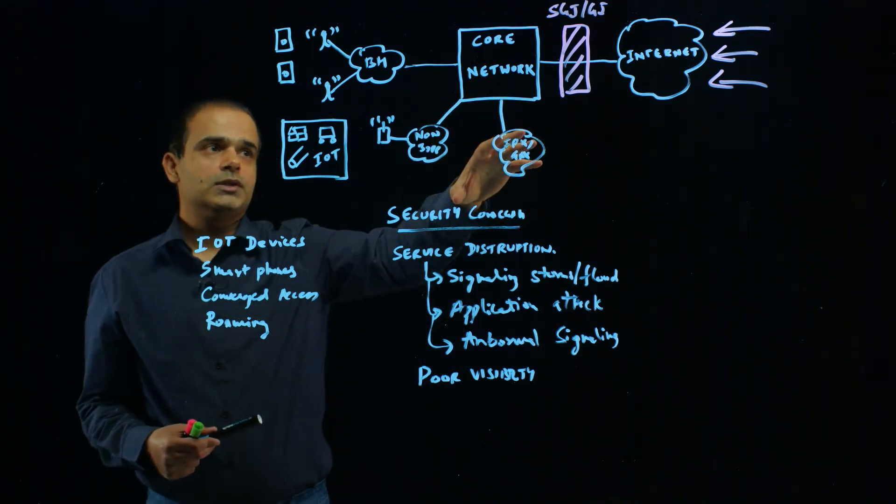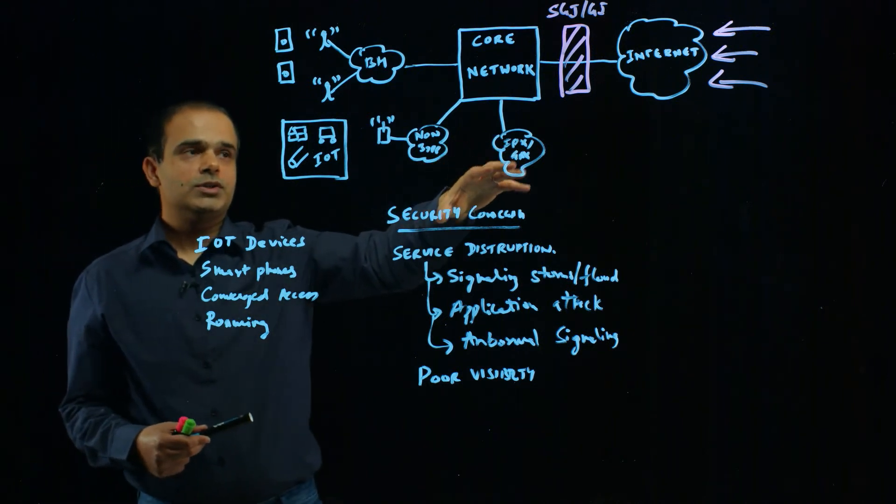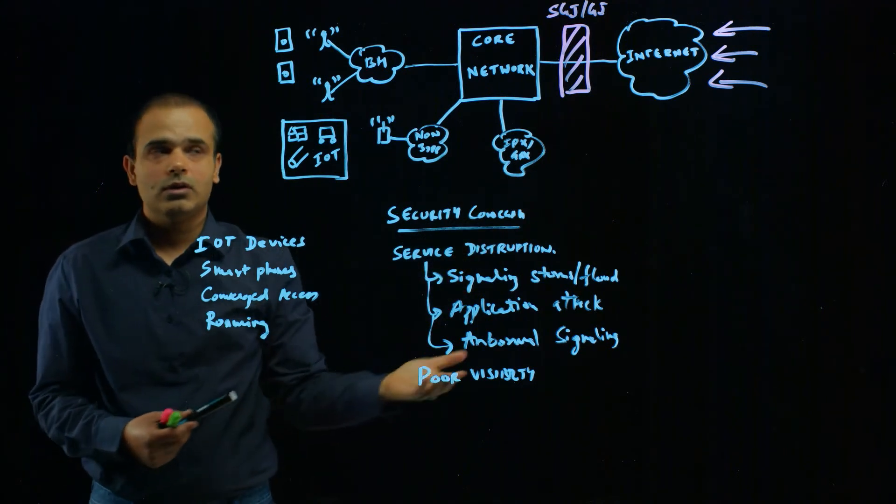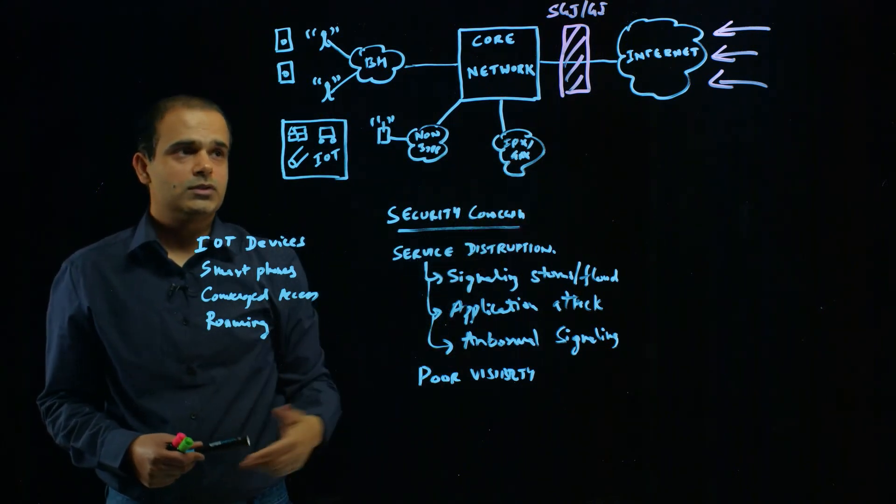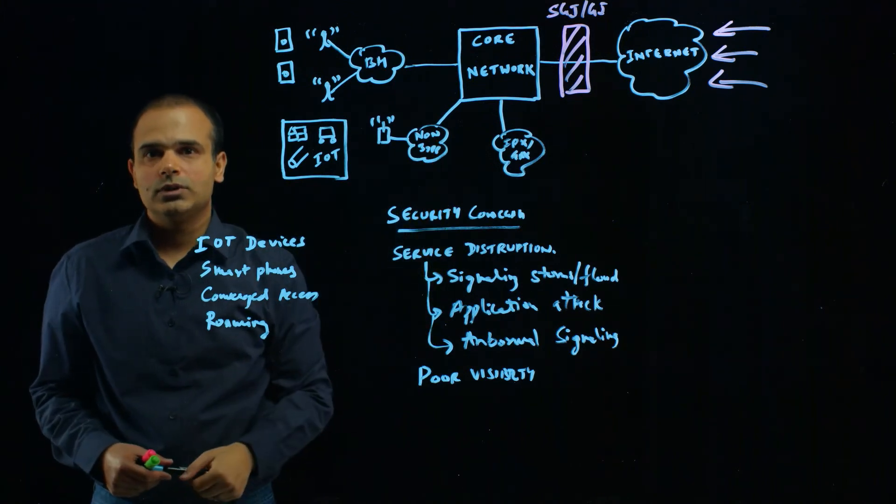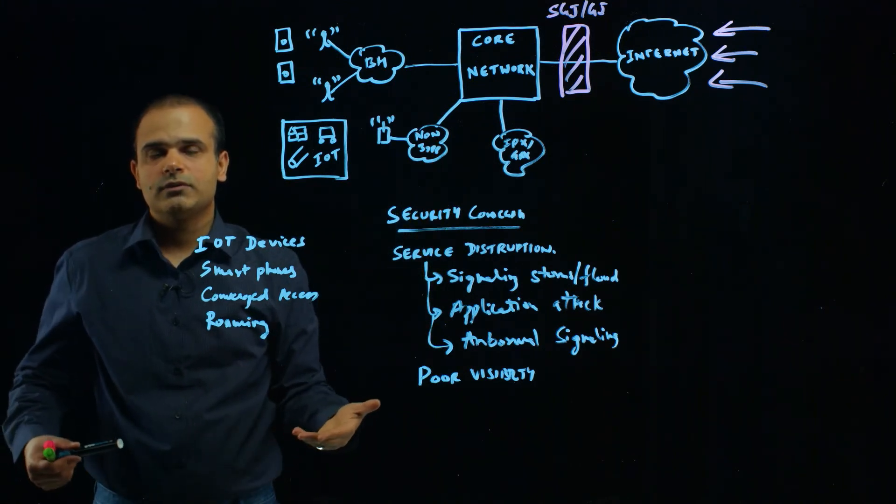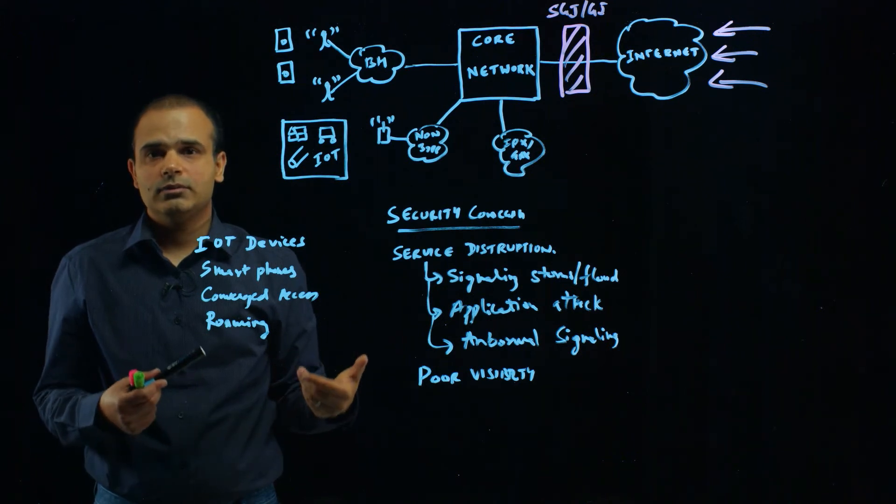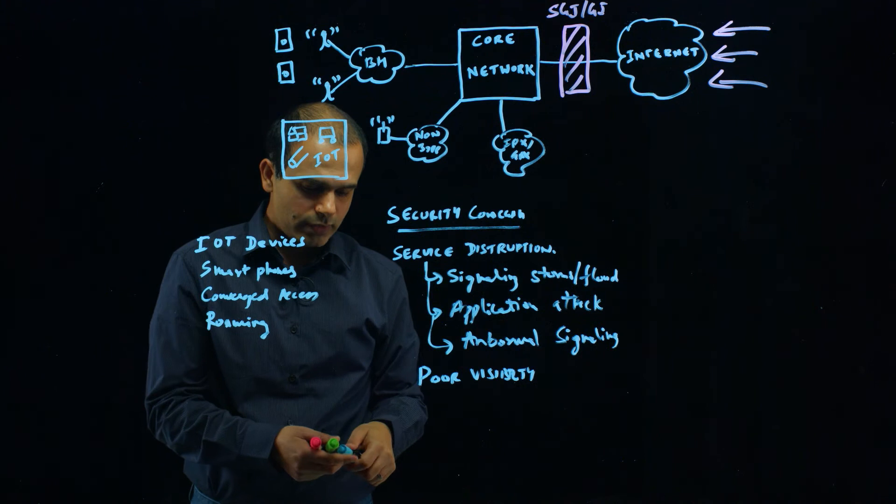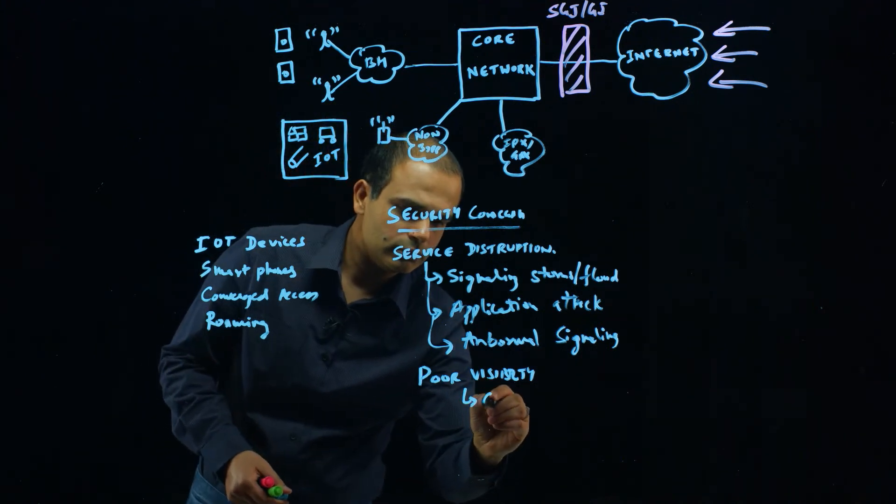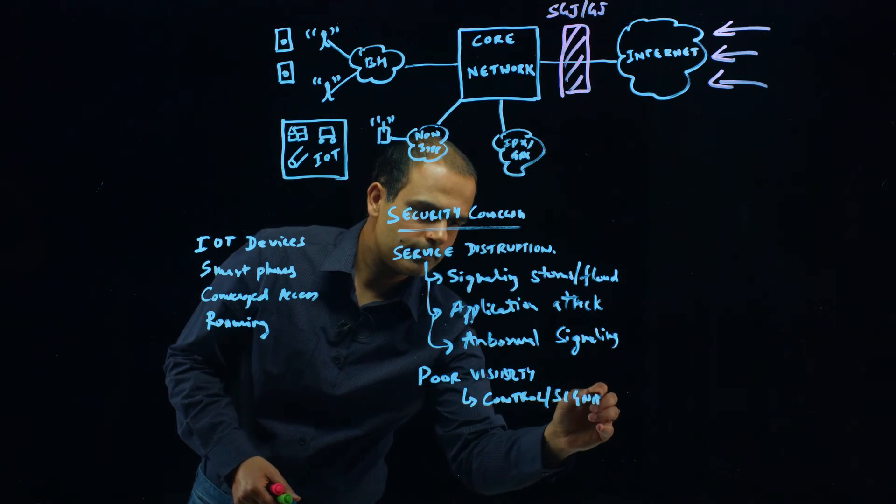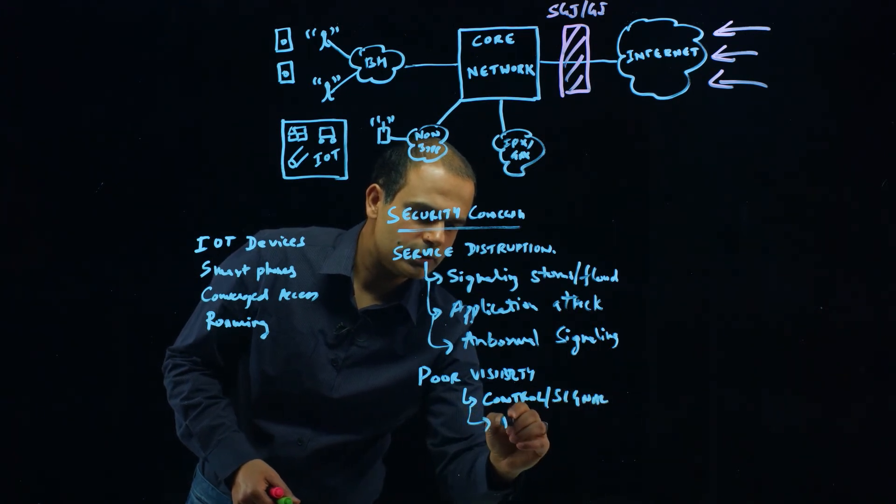In this legacy security architecture, the SGI-GI firewall is primarily sitting on the SGI-GI interface. Basically, there is no capability whatsoever inside the network to look at these types of malicious activities and provide prevention. This poor visibility is on both the control signaling as well as the data layer.